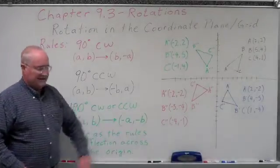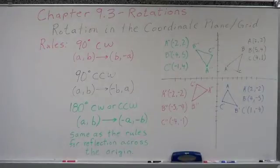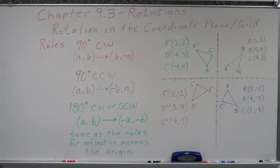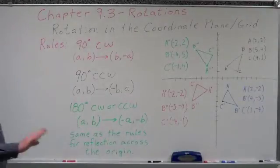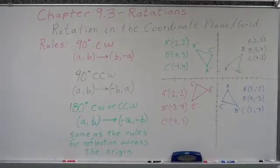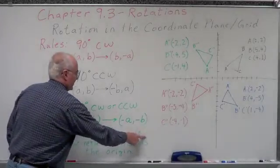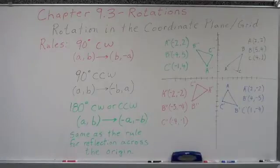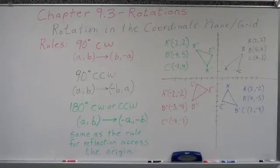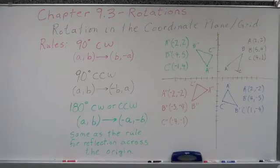For 180 degrees clockwise or counterclockwise — why does it not matter which direction you go? We take A and B, we don't converse them, we leave them the same, and we simply negate both of them. Where have we seen that rule before? It's the same as the rules for reflection across the origin. Rotation of 180 degrees about the origin is the same as reflection across the origin on the coordinate grid. So if you want to do a rotation or a reflection to get a 180-degree result, it doesn't matter — you can do either one.